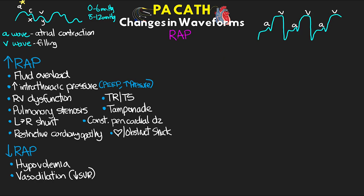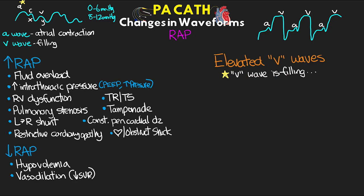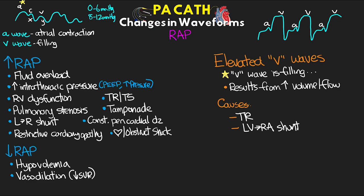Normally the A-wave is the highest wave, but in this next example we actually have elevated V-waves. Remember, the V-wave represents filling, so this results from increased volume or flow. Examples where we'd see increased volume or flow into the atrium include tricuspid regurgitation, or a rare LV-to-RA shunt, which would also increase flow into the atria.